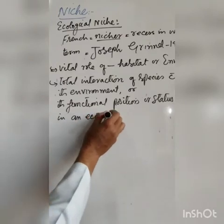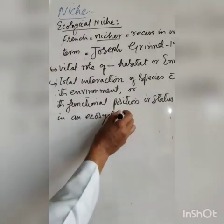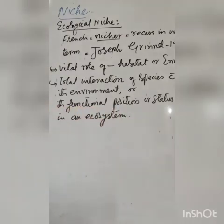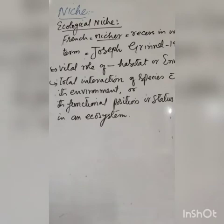Ecological niche refers to the functional role, position, or status of an organism in an ecosystem — how it interacts with other species, how it gets its food, and how it protects itself from enemies. This collectively is called the ecological niche of a species.